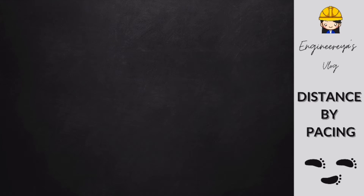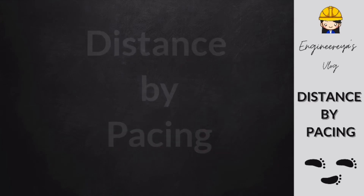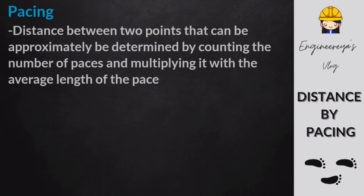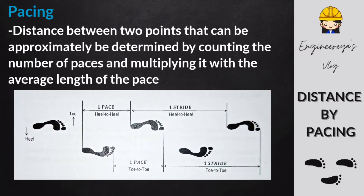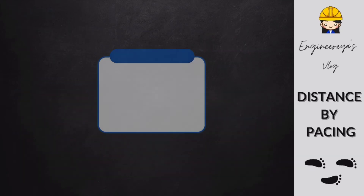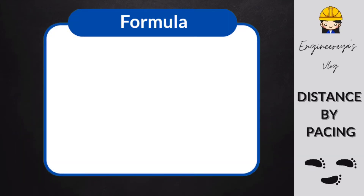In this topic, we are going to focus our discussion on distance by pacing. When we say pacing, it is a distance between two points that can be approximately determined by counting the number of paces and multiplying it with the average length of the pace. Let us look at the figure. Pacing can be measured toe-to-toe and heel-to-heel. One step is equivalent to one pace. The double step is called stride — one stride is equivalent to two paces. To compute the pace factor, here is the formula.